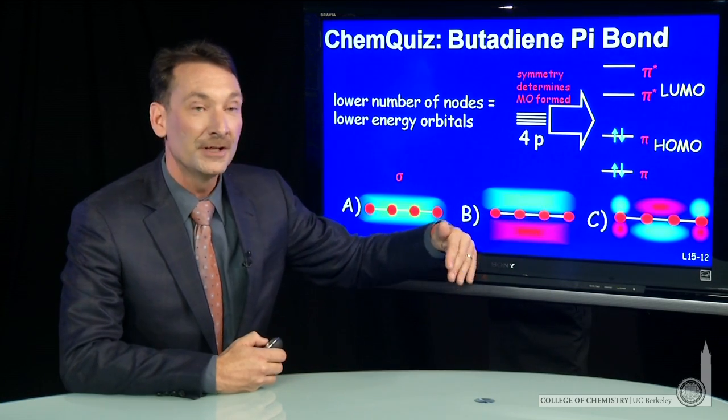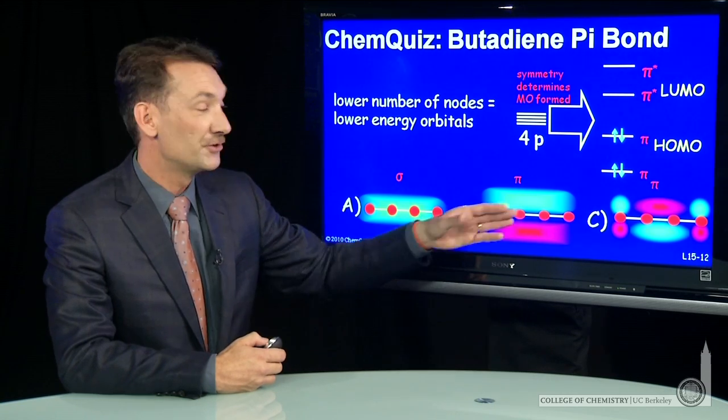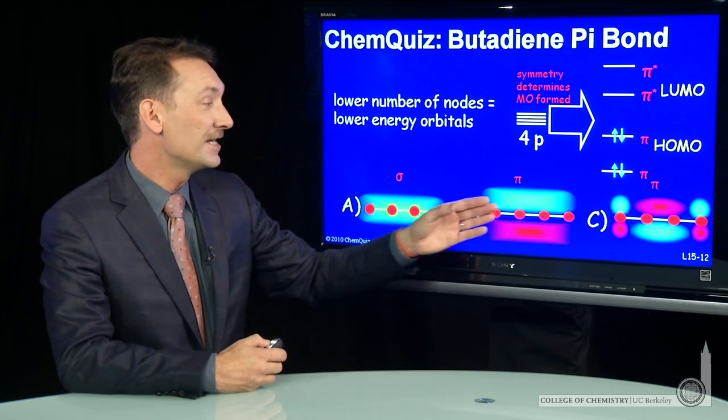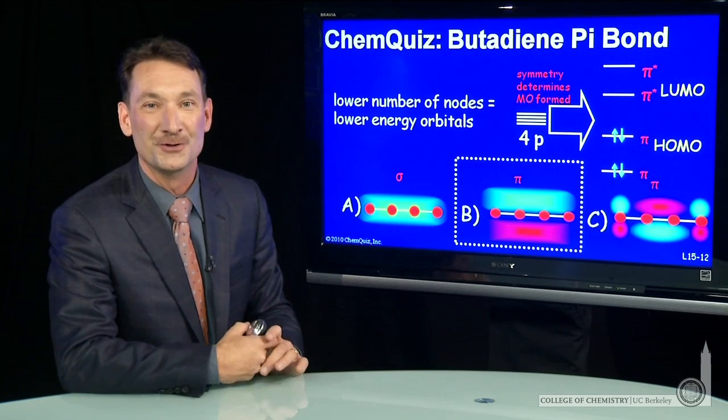And this is a pi orbital, and among these two, this has the lower number of nodes, so it's the lower energy. So in this case, B is the lowest energy pi molecular orbital among those choices.